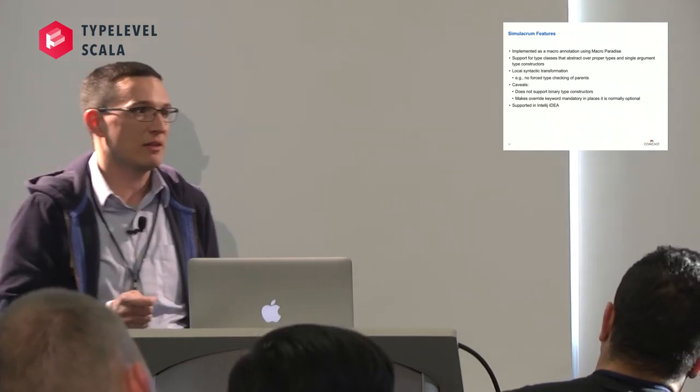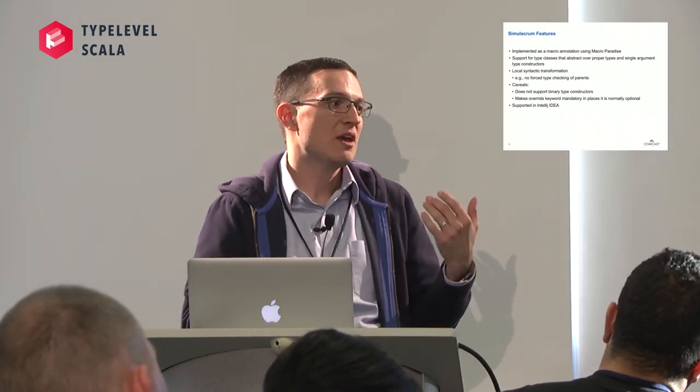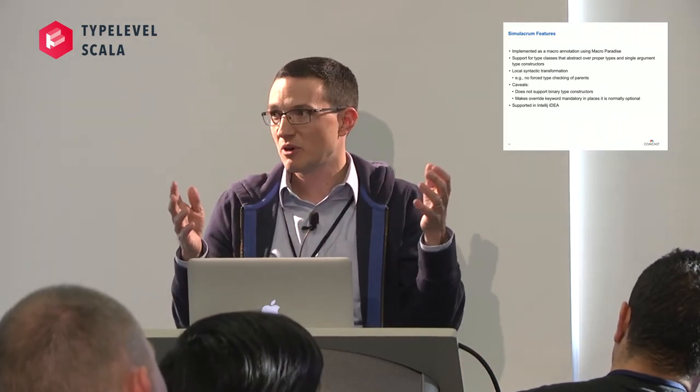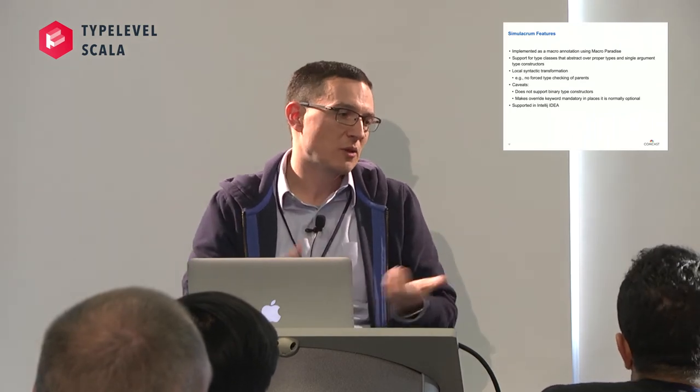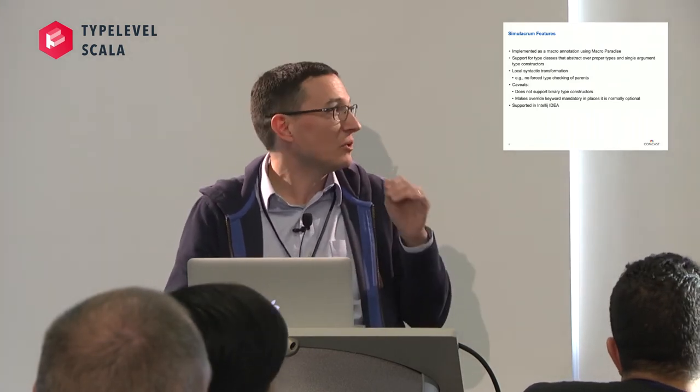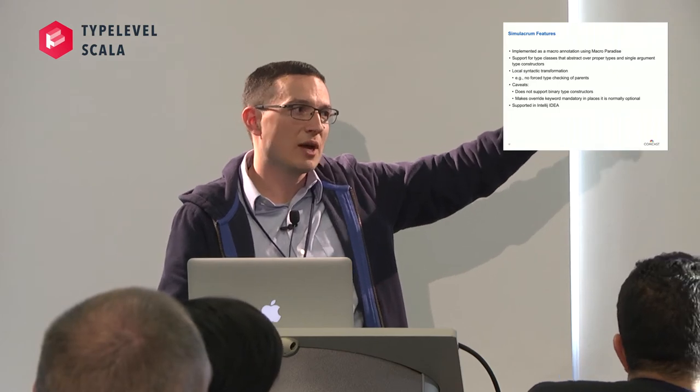It's a local syntactic transform — this is important. We don't type-check anything. The trees that are fed to Simulacrum, we take this policy that we're not going to type-check any of those trees; we have to work with what we're given. As a result, there are some things that bleed out — the abstraction's not perfect. For example, we don't know if Semigroup is actually a type class or just some random supertype. That's why in the CATS codebase you may see the Apply type class has a weird excludeParents parameter on the @typeclass annotation. Similarly with the override keyword — there are places where override would be optional in Scala, but it's mandatory when you use Simulacrum.